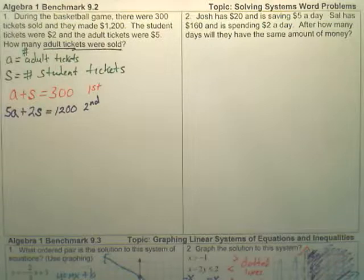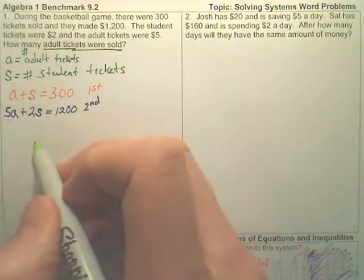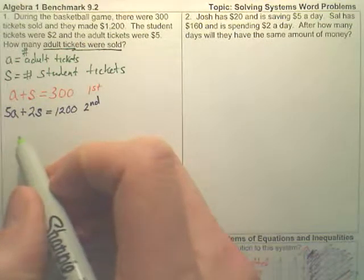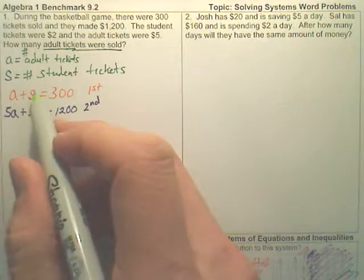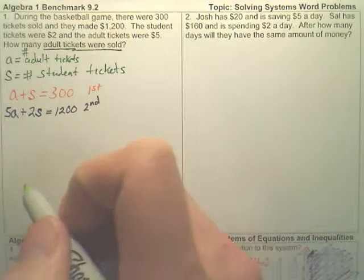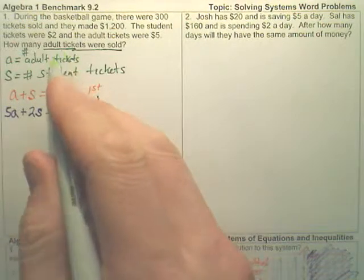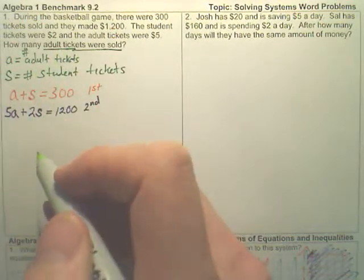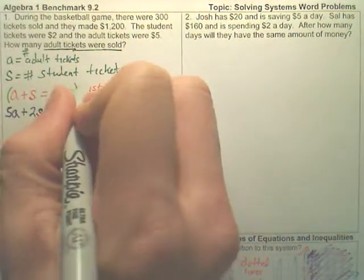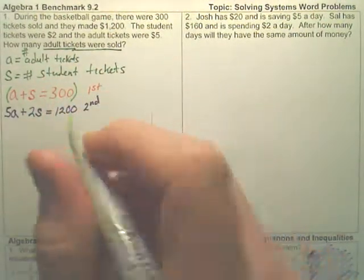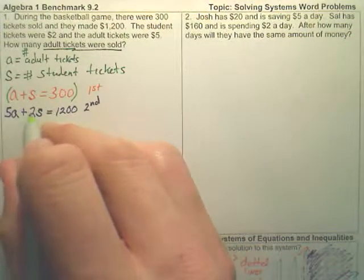Now, to solve this, I want to find A, correct? Could I do combinations or elimination and cancel my S's and find A? Because that's what we're looking for. We're looking for A, adult tickets sold. So what I'm going to do is I'm going to take my first equation. And what could I probably multiply that by so it cancels with the 2? I'm going to multiply it by negative 2.